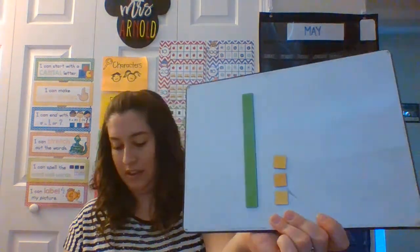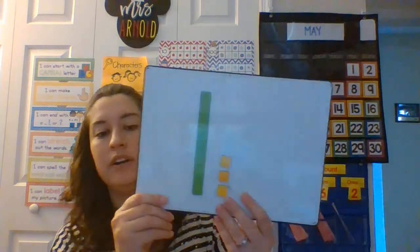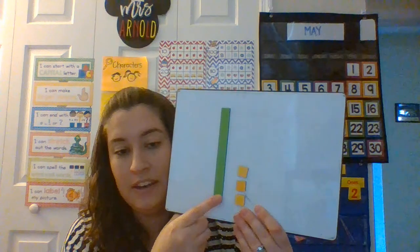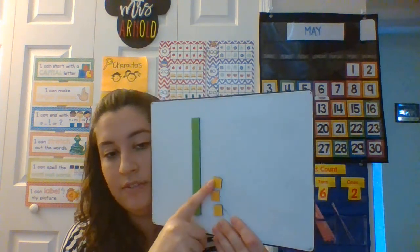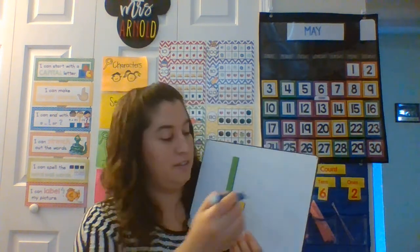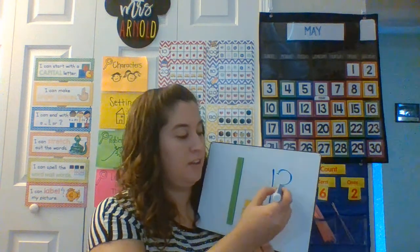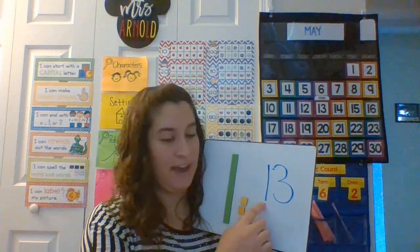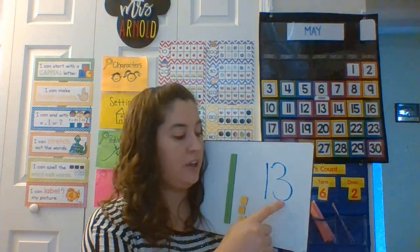Let's do another. This time we have a group of 10 and three more. What number do you think it could be? A group of 10 and three more. 10, 11, 12, 13. A group of 10 and three more. That one represents our group of 10 and that three represents our three more.